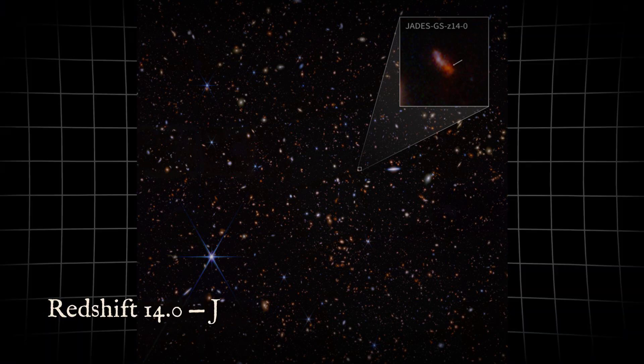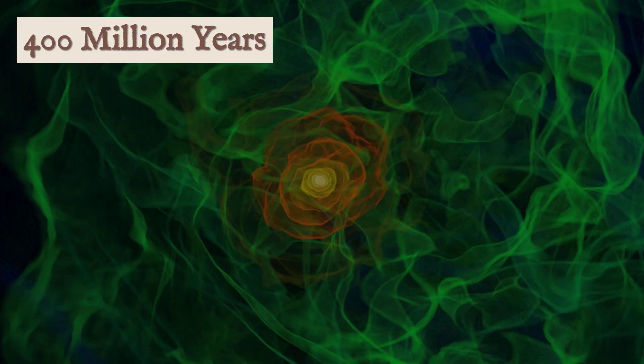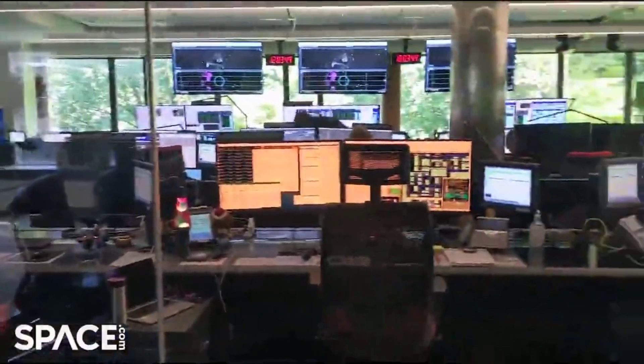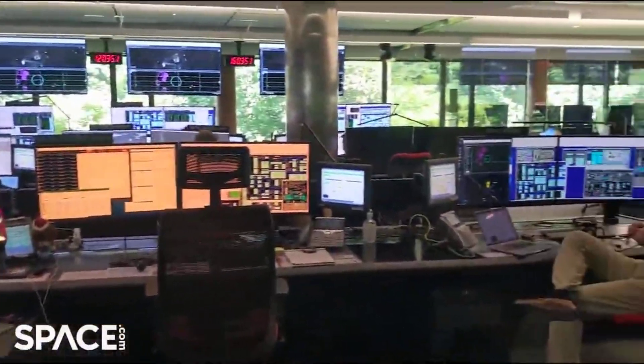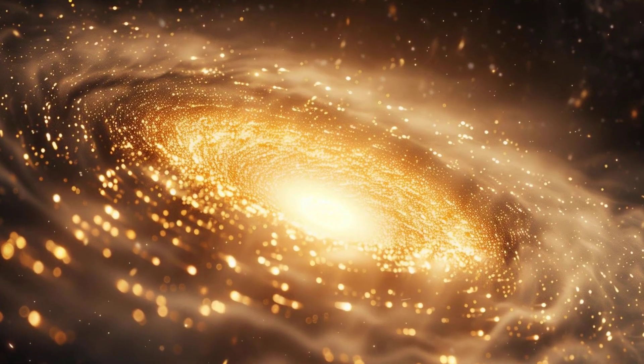That means its light left when the universe was only about 2.4% of its current age. Another, JADES-GS-z14-0, clocks in at redshift 14.0, pushing the record even further back. For context, these redshifts translate to a time when the universe was less than 400 million years old. But the real shocker wasn't just how far back these galaxies appeared, it was how much they had already grown.